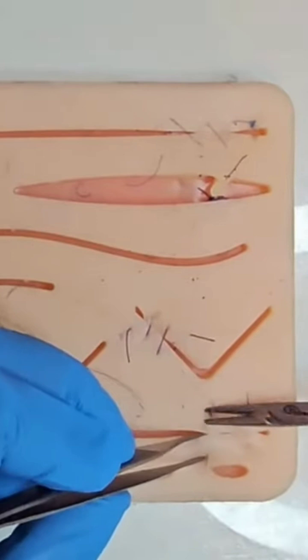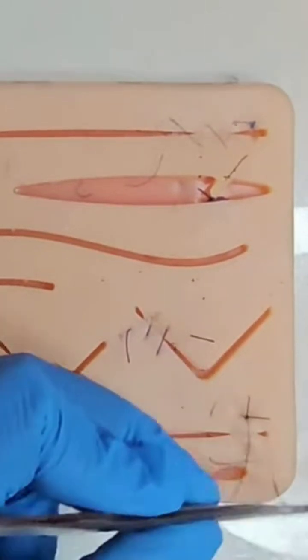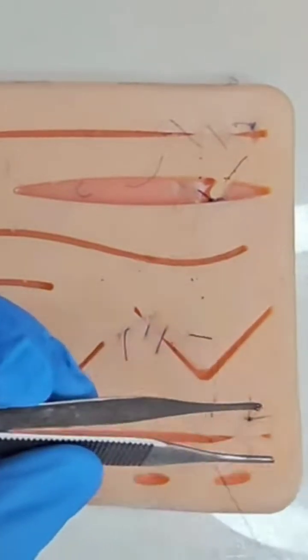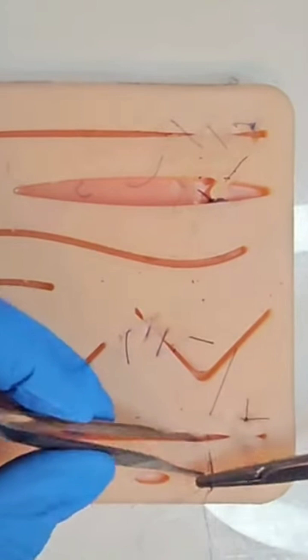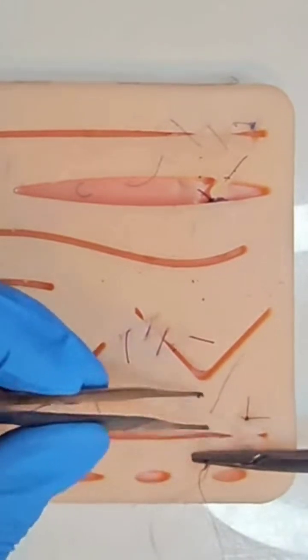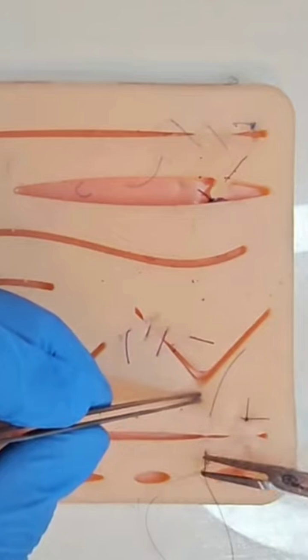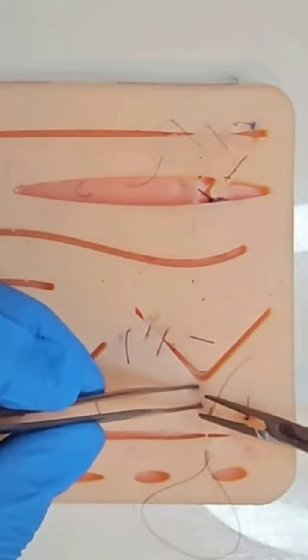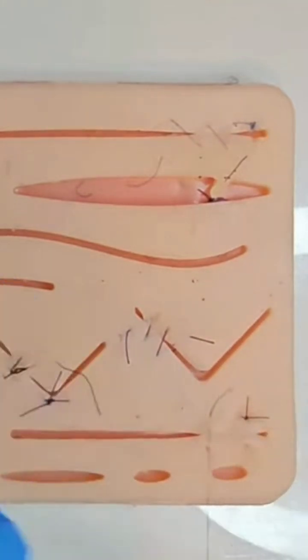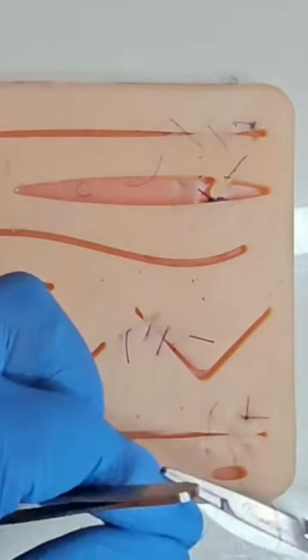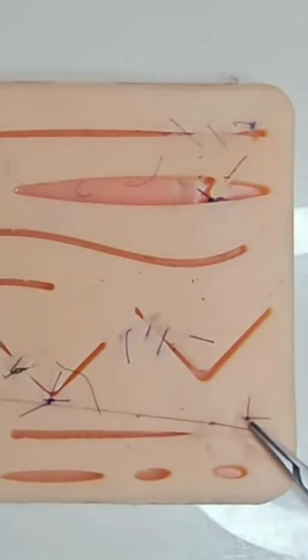The vertical mattress: here your third bite is directly in front of your second exit point, closer to the wound edge. The exit point is in front and in line with the first entry point. This is useful for wound eversion in smaller wounds.